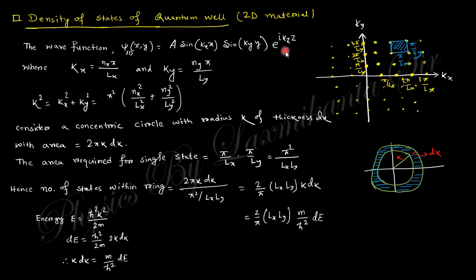The wave function will be like that, where kx is this and ky is this. So total k squared equals to like that. And if you consider a circle in k-space with thickness dk, then the area will be 2πk dk.